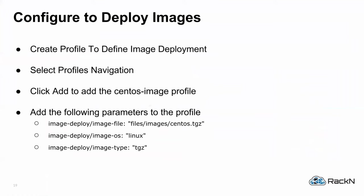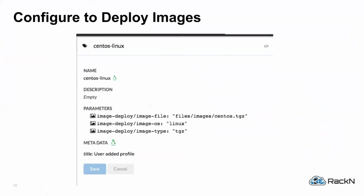There's one more thing we have to do and then things get more exciting. We have to create a profile. A profile in our system is a collection of parameters — things we want to know about the system. We're going to define image parameters to actually deploy our image, which is a CentOS root tarball we've already built. We'll tell the system via profile, and eventually put that profile on a machine so it inherits those parameters as it goes through the process.